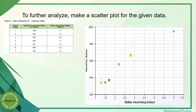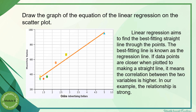To further analyze, we can plot a scatter plot to better analyze the data. Place variable x on the horizontal axis and variable y on the vertical axis, then plot the points. After that, draw the graph of the regression equation line. As you can see, the points are close to the regression line — some are almost touching it.